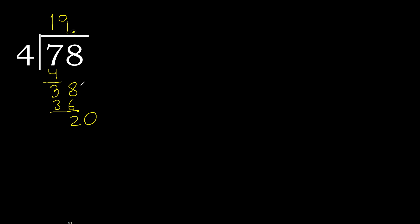Here, point. 0 point 20. 4 multiplied by 5 is 20. Subtract: 0. 0, therefore finish.